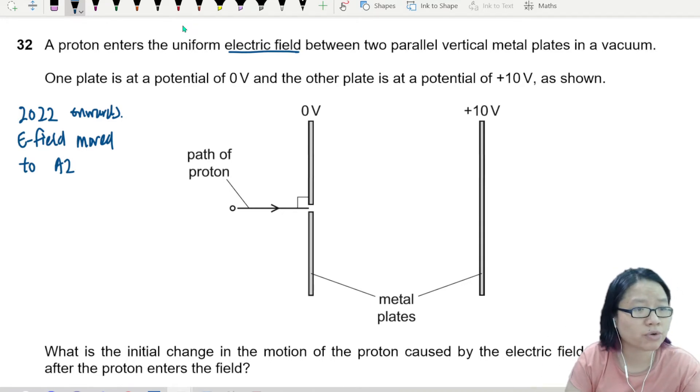But I'll still do the question for completion's sake. So here is a proton entering a uniform electric field between two parallel vertical metal plates. One plate is at a potential of 0V and the other plate is at a potential of +10V. You can watch this to prepare for your A2 or so on.